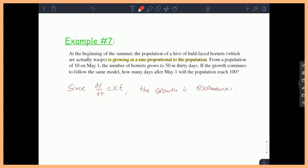So that's really important moving forward. They told me the rate is proportional, which means I can assume dY/dt is equal to KY. And that is just an indication to me that this is an exponential growth problem.